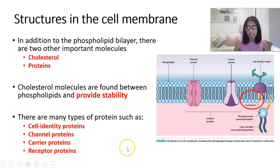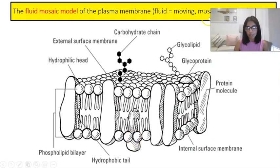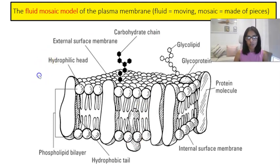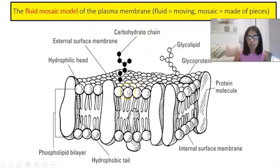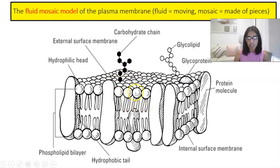The fatty acid tails, on the other hand, are water fearing — they are hydrophobic — which is why they point inward, away from the water. There's a cartoon to illustrate this: the tails are scared of water and move away from it, while the heads love water. When many phospholipids arrange themselves together, they form two layers — which is why it's called the phospholipid bilayer — with hydrophobic tails pointing inward and hydrophilic heads facing outward.